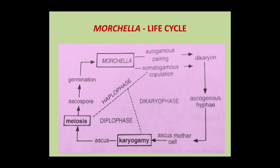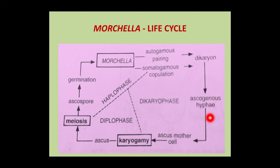Morcella life cycle: plasmogamy occurs by two ways — autogamous pairing or somatogamous copulation. By these two ways, the dikaryon phase gets established, meaning two nuclei are present in a single cell (dikaryon stage or dikariotization). From the dikaryon cell, ascogenous hyphae arise, and the terminal cell functions as the ascus mother cell. In the ascus mother cell, karyogamy occurs — fusion of the two dikaryon nuclei — resulting in the formation of synkaryon.